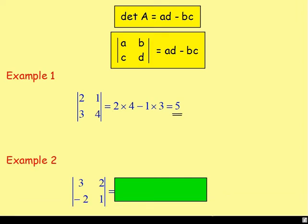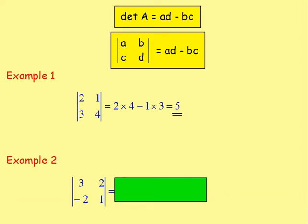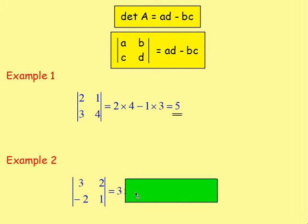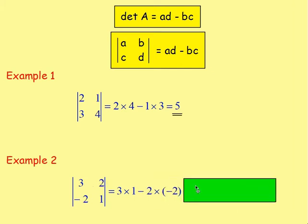Example 2: once again we want the determinant of the matrix 3, 2, negative 2, and 1. We do A times D so it's 3 times 1, and then take away 2 times negative 2. If you work that out you get 7.